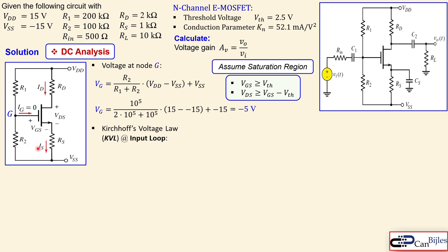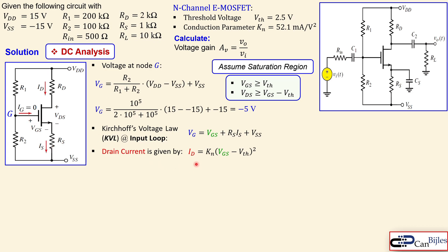Next, we apply Kirchhoff's Voltage Law around the input loop: VG = VGS + RS·IS + VSS. We know VG but not IS. Since the gate current is zero, IS = ID, and for saturation the drain current is ID = KN(VGS − VT)². Substituting this expression for ID into the KVL equation gives a single equation with VGS as the only unknown.